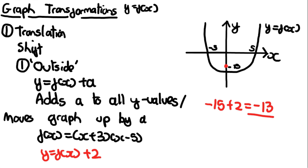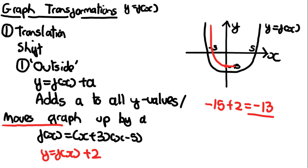We can now sketch the translated graph — remember, it moves the graph up by a. Following this, the graph looks like this, with the whole graph moved up by 2. The new y-intercept is −13. The way I would sketch graph transformations is to find the y-intercept or the roots, identify where the new y-intercept is, and sketch by following that.